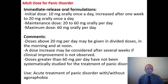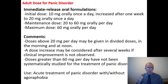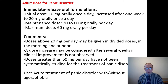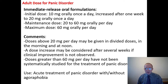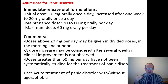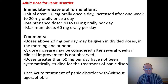Adult dose for panic disorder. In panic disorder we have a difference from almost all other diseases. What is the difference? It is the initial dose. Initial dose in panic disorder is 10 mg orally once a day, increased after 1 week to 20 mg orally once a day. Maintenance dose is 20–60 mg orally per day and maximum dose is also 60 mg orally per day. Doses above 20 mg per day may be given in divided doses in the morning and at noon. A dose increase may be considered after several weeks if clinical improvement is not observed. Doses greater than 60 mg per day have not been systematically studied for the treatment of panic disorder. Use: acute treatment of panic disorder with and without agoraphobia.